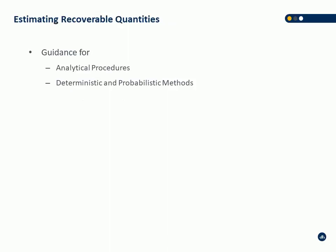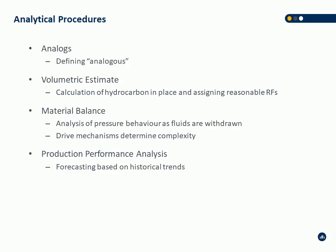Estimating recoverable quantities is the equivalent of what COGI calls evaluation procedures — guidance for analytical, deterministic, and probabilistic methods. The PRMS document has a very short couple of pages on this, while the Practical Application of PRMS document has probably 60 to 70 pages with very detailed examples. The four main analytical procedures listed in PRMS, same as COGI: analogs, volumetric estimates, material balance methods, and production performance analysis.